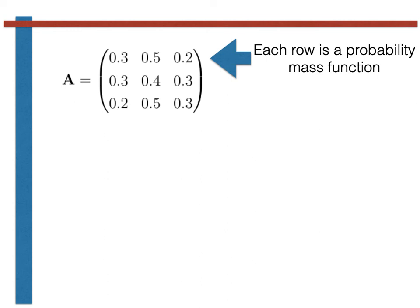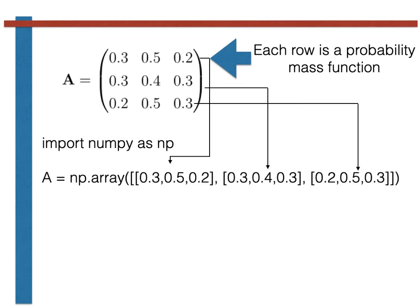Each row in the transition matrix is entered into square brackets, and these three sets of numbers in square brackets are placed in a comma-separated list. This then all needs to be surrounded by another set of square brackets, and the whole thing is placed inside an np.array command. A is thus the variable that holds our transition matrix.